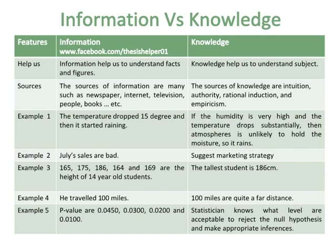Example 5 of information: p-values are 0.0450, 0.0300, 0.0200 and 0.0100. Example 5 of knowledge: a statistician knows what levels are acceptable to reject the null hypothesis and make appropriate inferences.